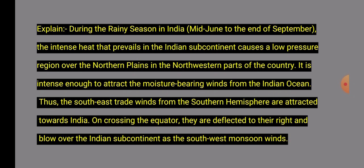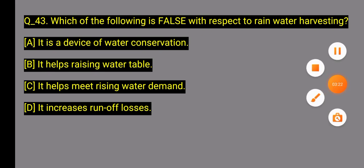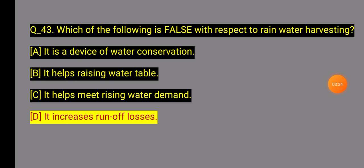Question 43: Which of the following is false with respect to rainwater harvesting? Option: It increases runoff losses — this is the false statement with respect to rainwater harvesting.